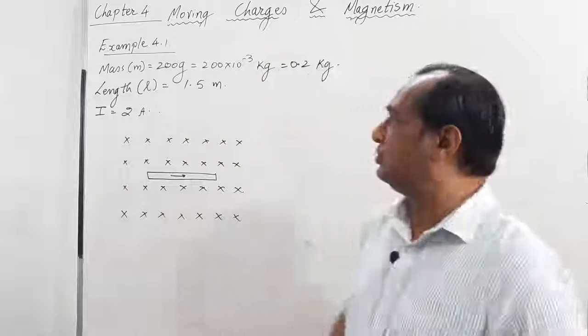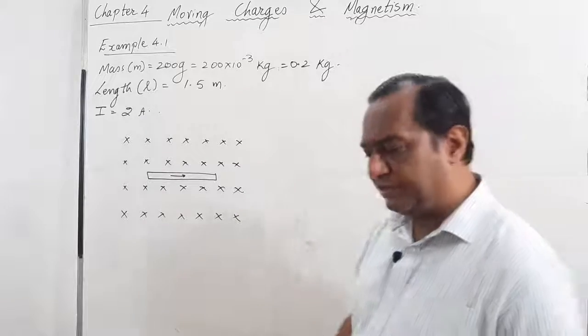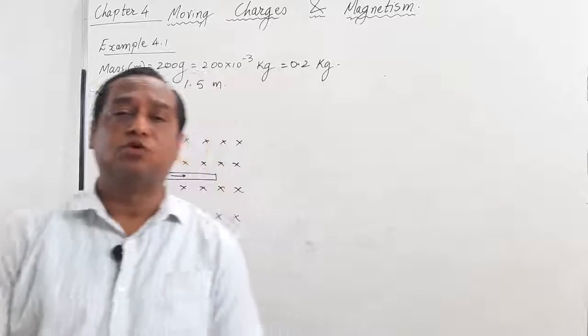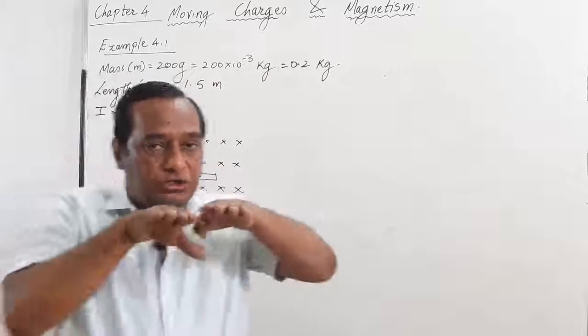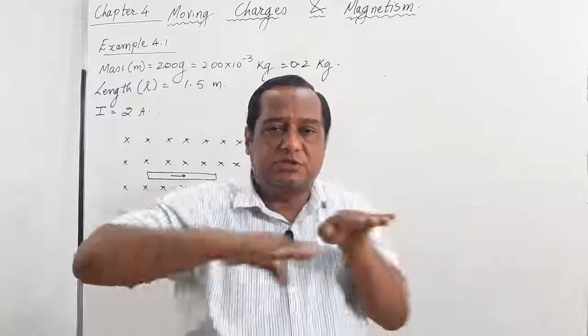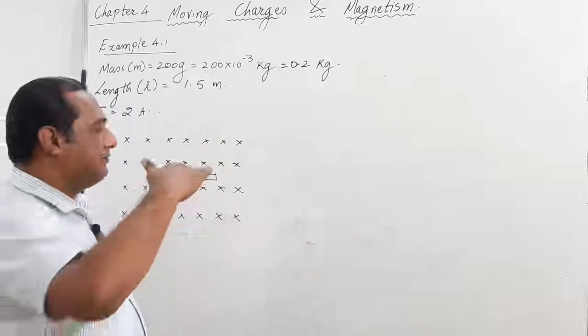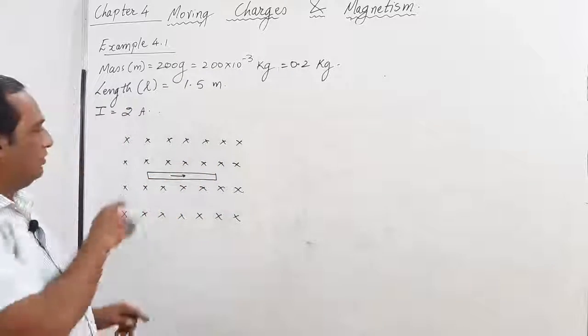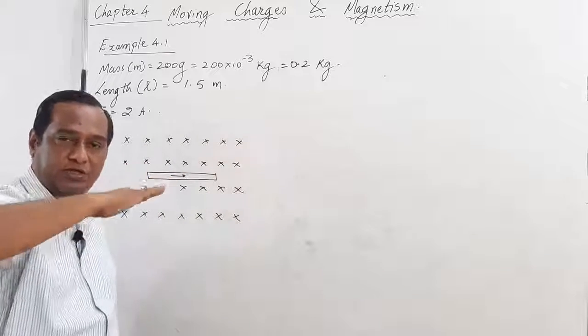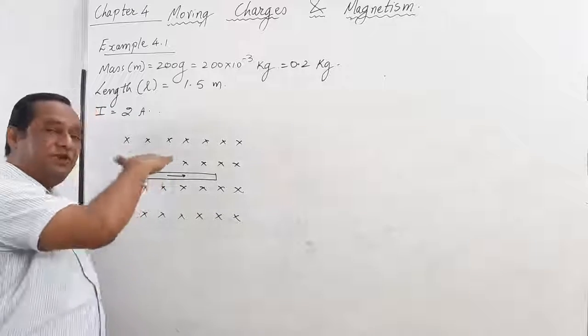So students let us go ahead with the solution of example 4.1. It is a very simple problem. In the question I have been told that the magnetic field is horizontal, horizontal to the earth surface. So the magnetic field can be like this. I have made this magnetic field. Our magnetic field is entering inside the board. So I have made this cross, the magnetic field is entering into the board. So it is horizontal. The magnetic field is horizontal.